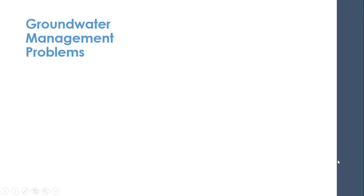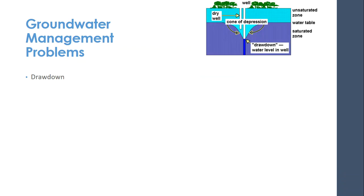We have some problems managing our groundwater. The first is called drawdown. Basically, if I drill a well and the water table drops, I create what's called a cone of depression. The water level has dropped and now I have to dig a new well. If you're not on city water but getting well water, one of the worst things is to turn on your tap and have no water — because that can mean your pump went bad, or the much more expensive problem: you have to drill a new well.